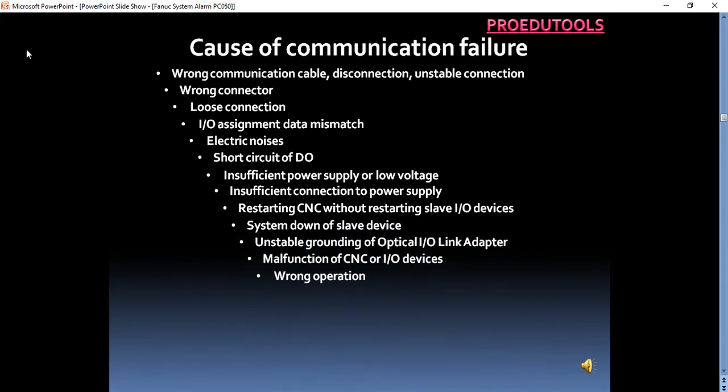Cause of communication failure. IO-Link communication failure can be caused by various causes such as followings: wrong communication cable, disconnection, unstable connection, wrong connector, loose connection, IO-assignment data mismatch.